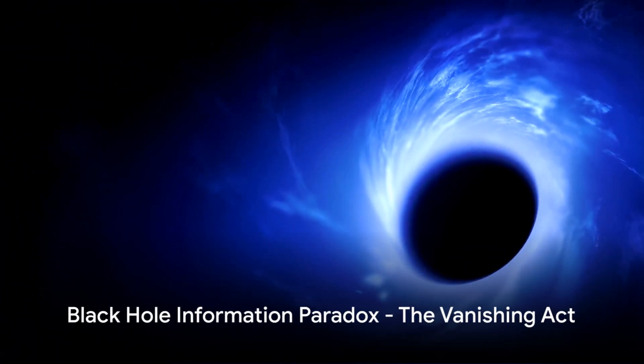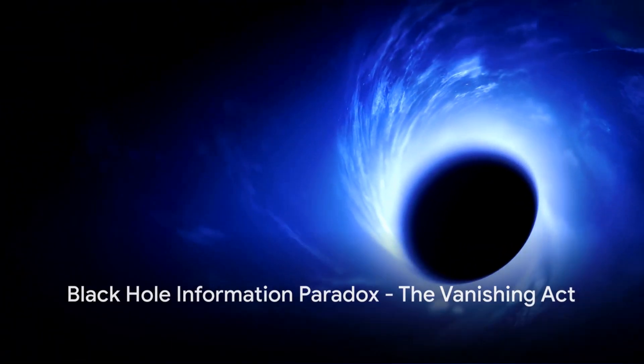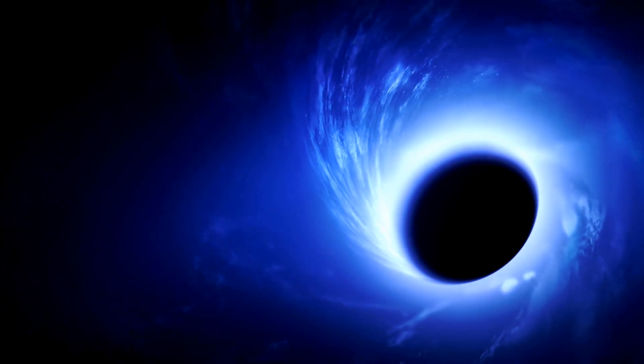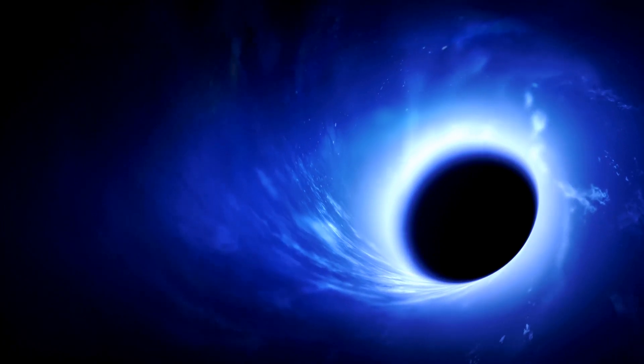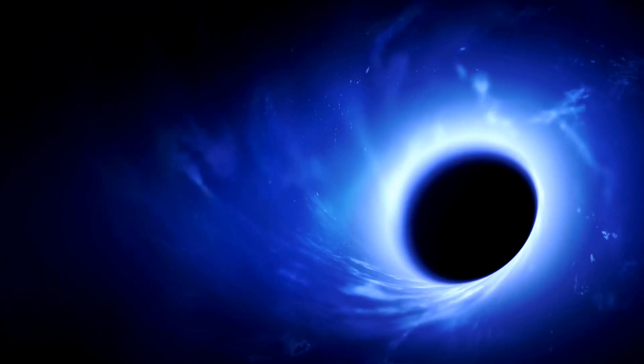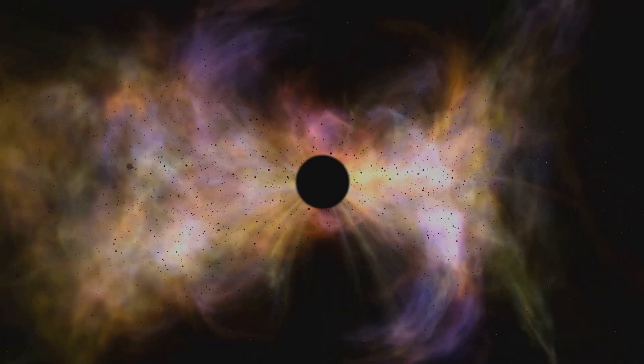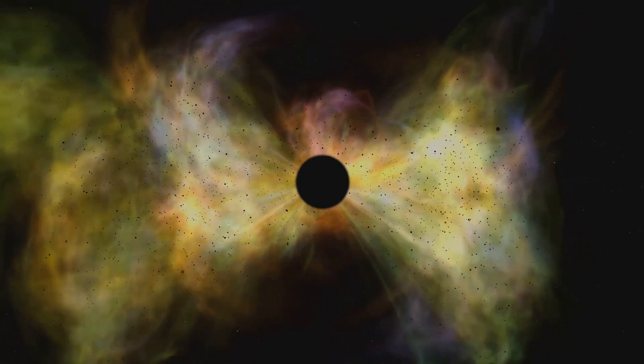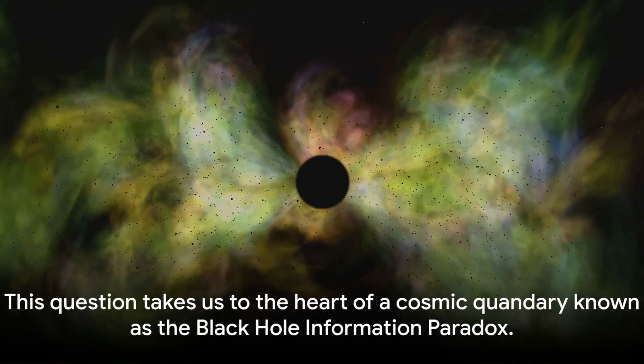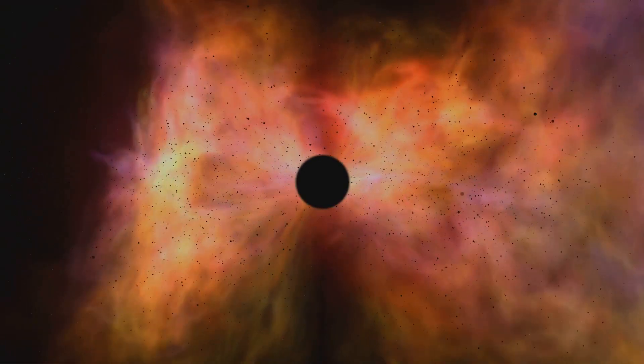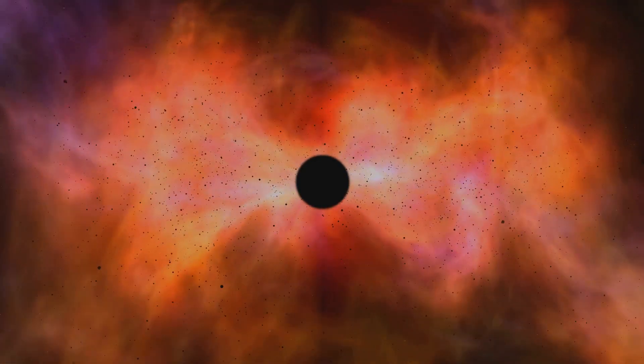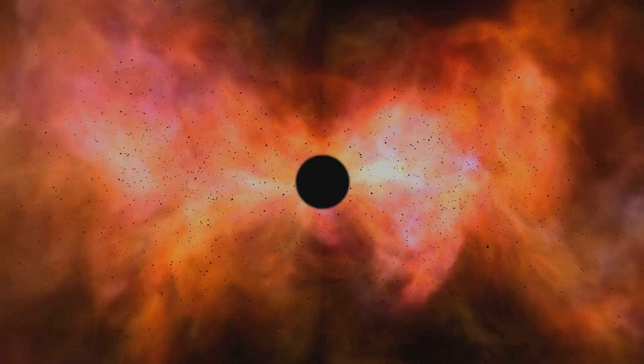What happens to the information about the physical state of things that fall into a black hole? This question takes us to the heart of a cosmic quandary known as the black hole information paradox. First proposed by celebrated physicist Stephen Hawking in the late 20th century, this paradox has been keeping scientists on their toes, forcing them to question fundamental principles of quantum mechanics and general relativity.